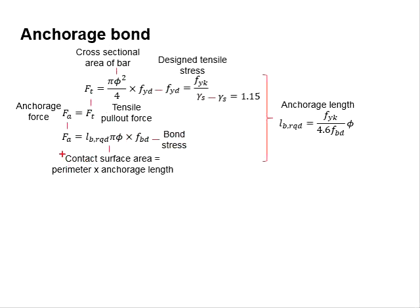The contact surface area is calculated by multiplying the perimeter of the steel bar with the anchorage length. Assuming the steel bar is circular in cross-section, this equation is applied.